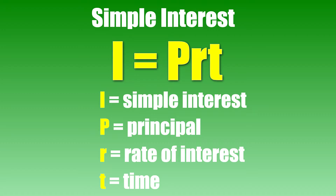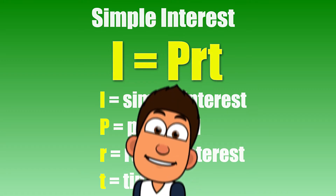Principal (P): This is the principal amount initially borrowed or invested, denoted by P. Rate (R): The rate at which the principal amount of an investment is paid to someone. It can be an amount such as 5%, 10%, or more, and is denoted by R. Time (T): The duration that the principal amount is placed with someone, denoted by T.